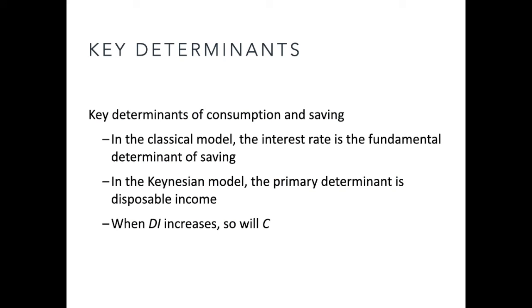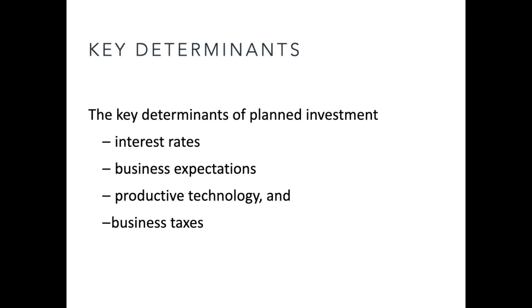The key determinants of consumption and savings: in the classical model, the interest rate is the fundamental determinant of savings; in the Keynesian model, the primary determinant is disposable income. When disposable income increases, so will consumption. The key determinants of planned investment include interest rates, business expectations, productive technology, and business taxes.